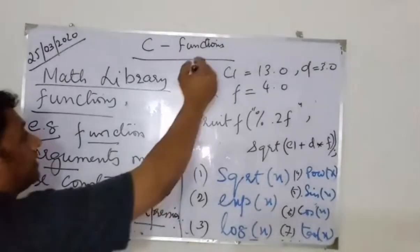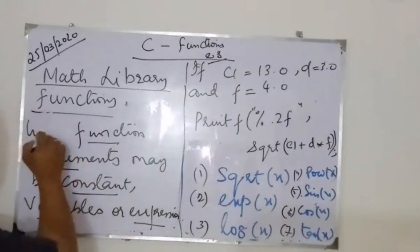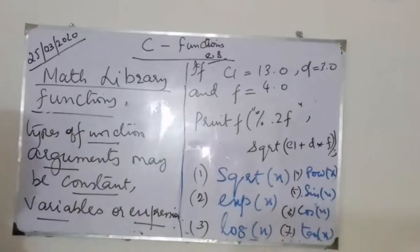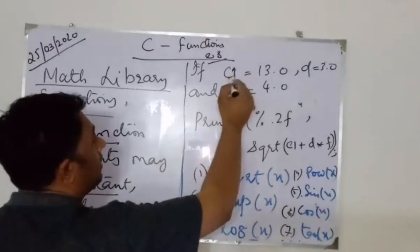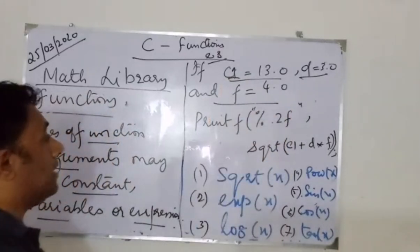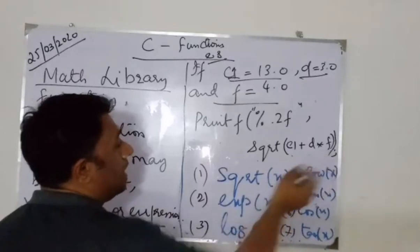Let's take an example over here. This is an example, this is the type of functions, types of arguments. If I say that C1 is value of 13.0, B is 3 and F is 4. And then, printf %.2f is of C1 plus B asterisk F. Now basically this function is used.